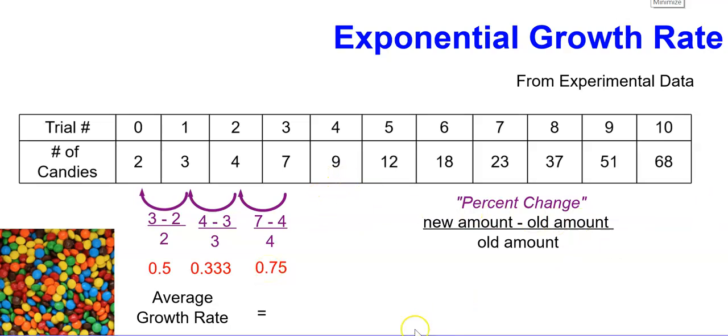Continue on and then we're going to take the average. The average is adding up all the numbers and dividing by the 10 trials that we did. So we'd add up 0.5 plus 0.333 plus 0.75, and then divide by 10. That will give us the average growth rate for this experimental data.